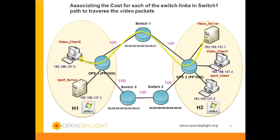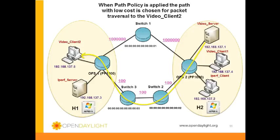Before the path policy is applied, the default cost of 100 is applied to all the paths. The video traffic takes the shortest path, that is OFS2 to switch 1 to OFS1. Once a path policy is applied, the cost between OFS2 to switch 1 to OFS1 becomes 1 million. The cost between OFS2 to switch 2 to switch 3 and switch 3 to OFS1 continues to be the default cost of 100. After the application of path policy, the video traffic takes the low cost path, that is OFS2 to switch 2 to switch 3 to OFS1, where the total cost of the path is 300. By applying the path policy, the video traffic takes a different path from the IPERF traffic, which results in the improvement of video quality of client 2.